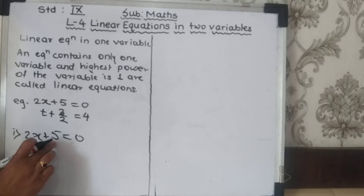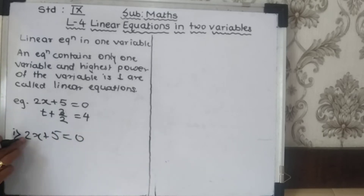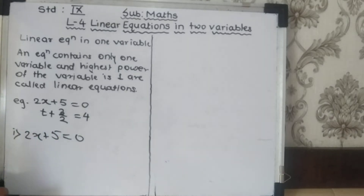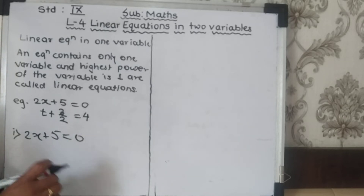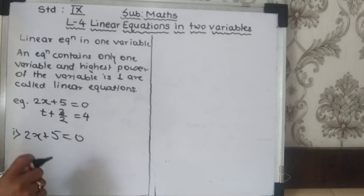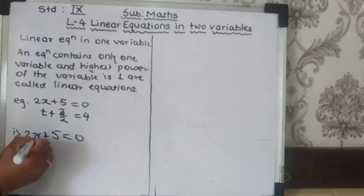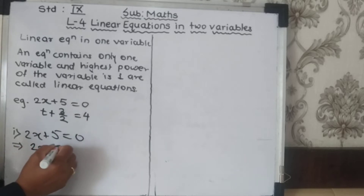If we don't want the +5, we subtract it from both sides. If we don't want the 2, we divide on both sides. That is one way. Another way is transposing — that method we have also seen.